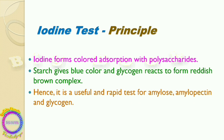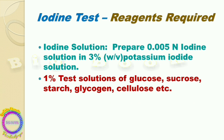The iodine test is also a useful and rapid test for amylose, amylopectin, and glycogen. It is rapid in the sense that you can directly add the iodine into the sample — no other reagent is required — and get the result.